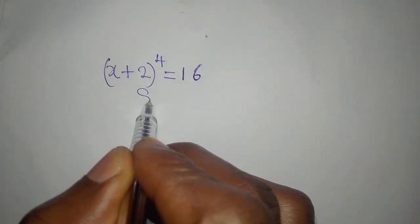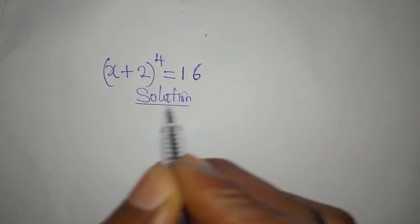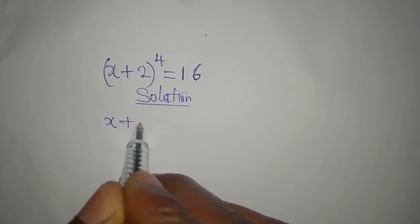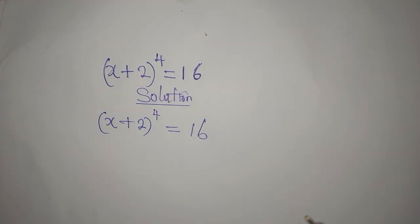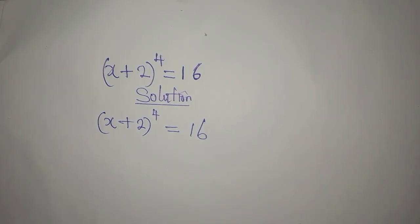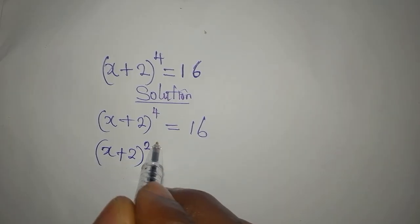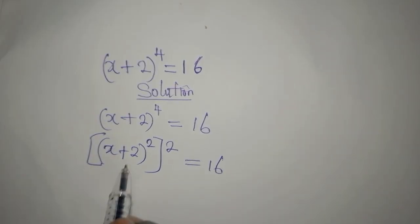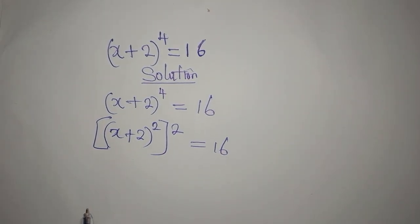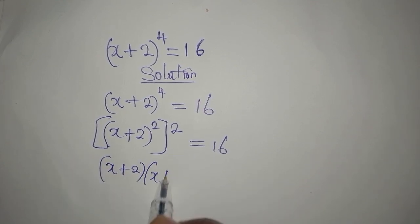Hi everyone, let's provide the solution to this problem: x plus 2 to the power of 4 equals 16. Let's break the left-hand side here as x plus 2 to the power of 2, to the power of 2, so that we can now expand what we have inside — that is x plus 2 multiplied by x plus 2.